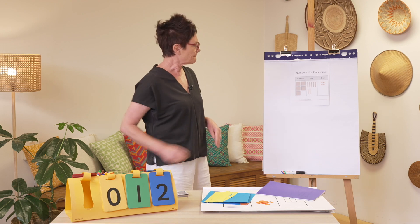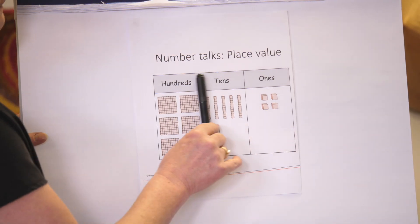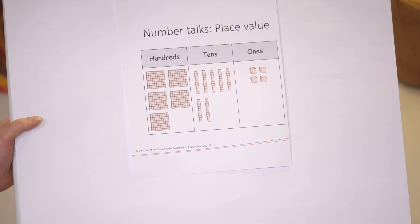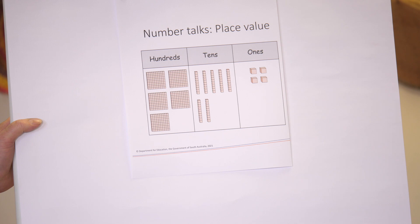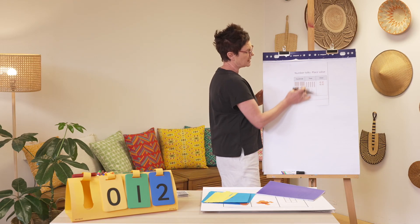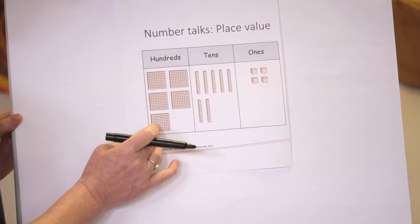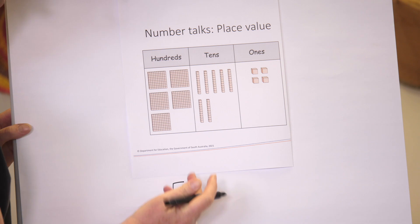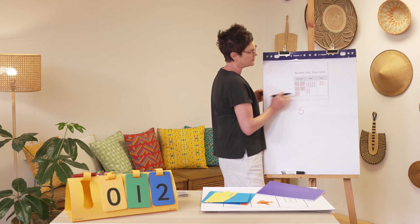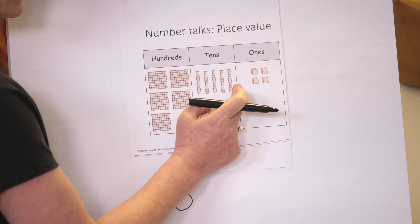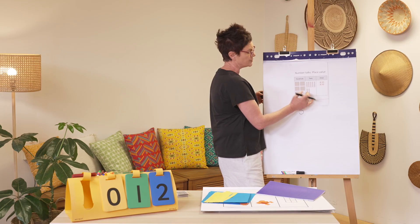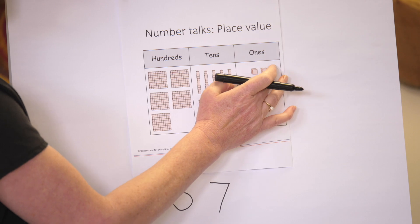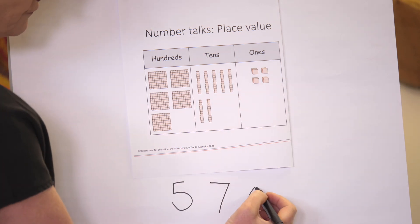Let's start with a warm-up number talk about place value. Here are our hundreds, tens and ones. My first question is: what is this number? Let's start at our hundreds — by subitizing I can see a three and a two, or a whole group of five, so I have five hundreds. How many tens? By subitizing I can see a row of five and two. Five and two makes seven — I have seven tens. For my ones, two and two makes a group of four — I have four ones.